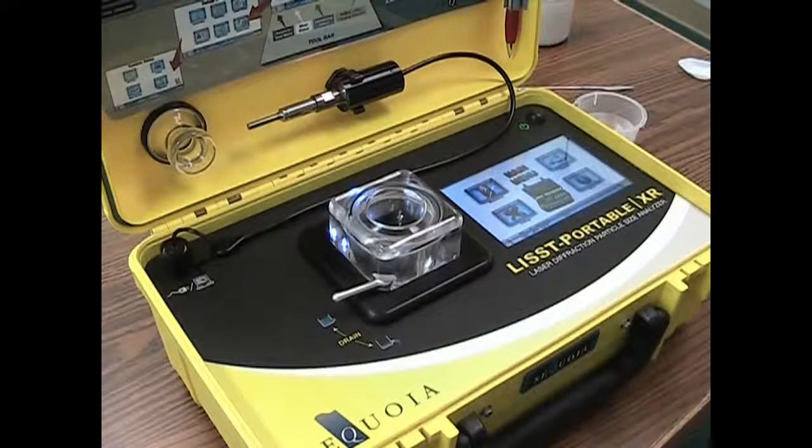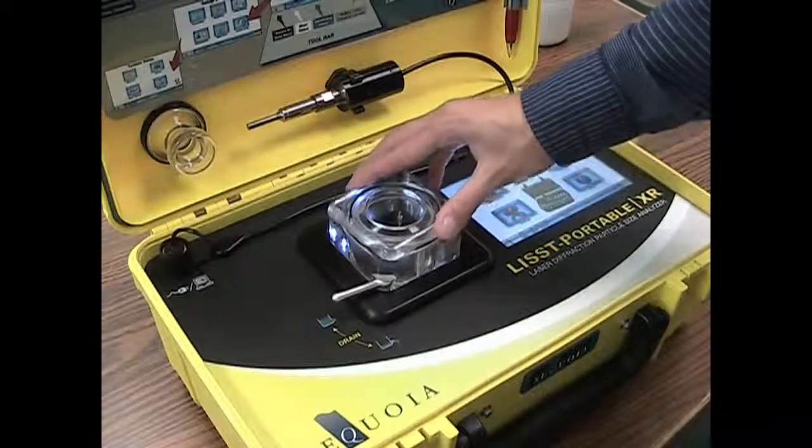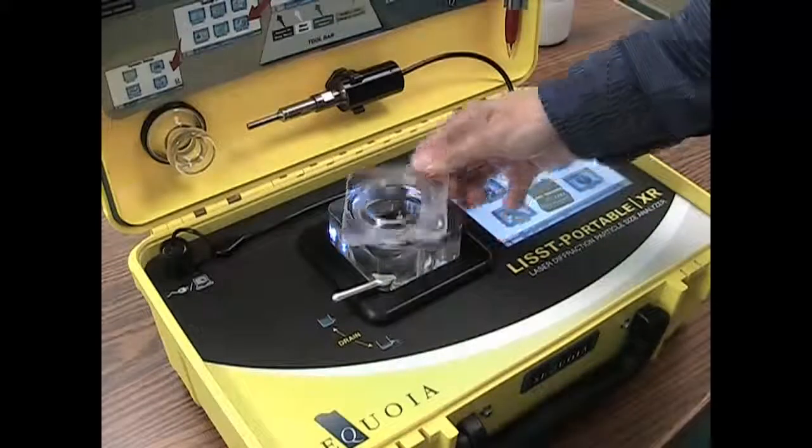Start by removing the top cover of the sample chamber. It's easiest to twist the cover first, then lift the cover off by one of the corners.